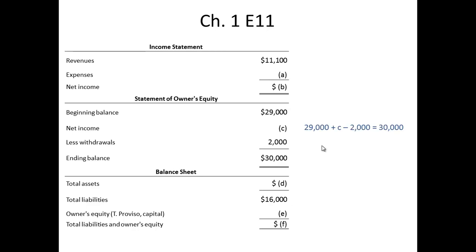So the equation is $29,000 plus C minus $2,000 equals $30,000. Rearranging using simple algebra, we get net income C equal to $3,000. Since the net income on the statement of owner's equity is the same as net income on the income statement, it follows that B is also $3,000.